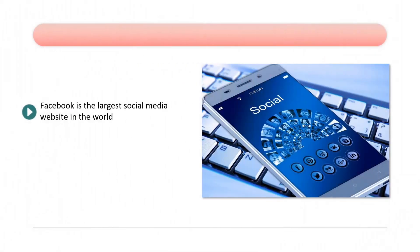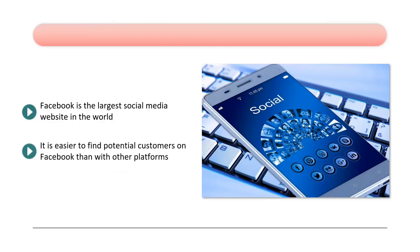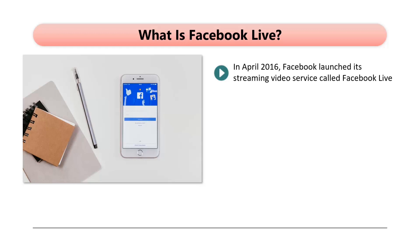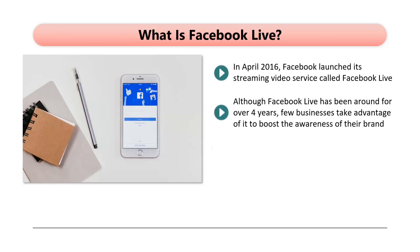Facebook Live 101. Facebook is the largest social media website in the world. At the time of writing, Facebook has 2.7 billion users and every month receives around 25 billion visitors. A proportion of those users would be ideal customers for your business — you can target people by age range, income, location, gender, interests, and more. In April 2016, Facebook launched its streaming video service called Facebook Live, allowing you to hold a live event with your target audience through your business page. Although Facebook Live has been around for over four years, few businesses take advantage of it to boost their brand awareness. All Facebook Live events are recorded and become available on your page after the event. Facebook has also tweaked their algorithm to give Facebook Live events higher priority, increasing the chance of users seeing your live stream.